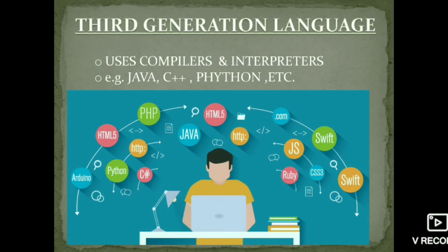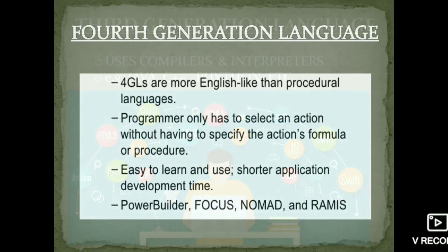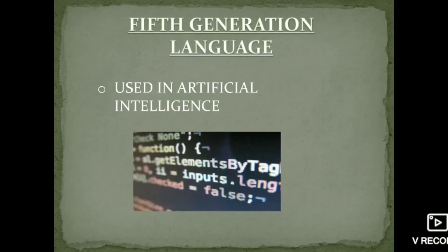Third generation language uses compilers and interpreters. Languages like Java, C++, and Python come under third generation language. Next is fourth generation language — it is a non-procedural language. Examples include Focus, Nomad, and Ramis. These languages are easy to learn and use.